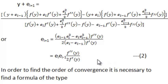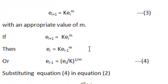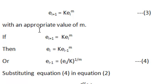Now we have to find the order of convergence of this method. For doing this we consider the formula: E of i plus 1 equals k into E_i to the power m. This is the formula for the order of convergence. To find the appropriate value of m, we also write: E_i equals k into E of i minus 1 to the power m. This is equation number 3.